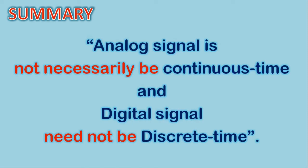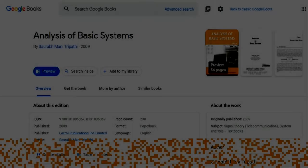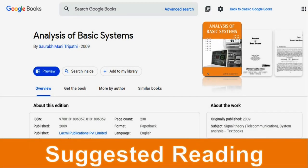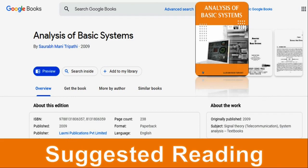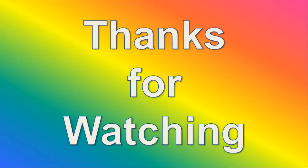While summarizing this short video lecture in one sentence: an analog signal need not necessarily be a Continuous Time signal, and a digital signal need not be a Discrete Time signal. I hope you are now able to explain why the terms analog and digital should not be confused with the terms Continuous Time and Discrete Time. That's it for now. Thanks for watching. Goodbye.